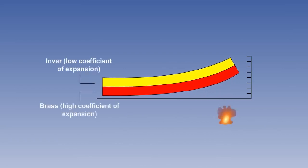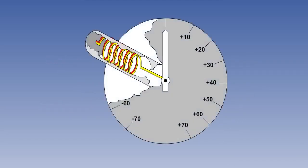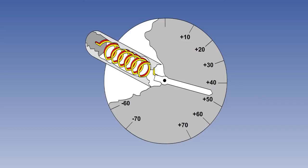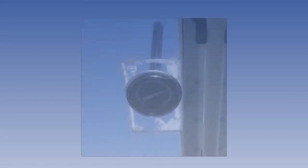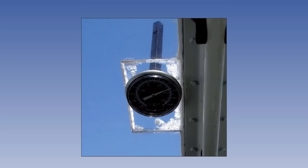How much the strip bends depends on the temperature rise and is therefore a measurement of temperature. The metals bonded together are often invar and brass. Invar is a specially developed steel with a low coefficient of expansion; brass, on the other hand, has a higher coefficient of expansion. If the bimetallic strip is wound into a coil or helix and one end is held fast, any temperature change will cause the helix to rotate, driving a pointer around a dial calibrated as a temperature scale. Simple direct reading thermometers are adequate for use in relatively low speed aircraft.